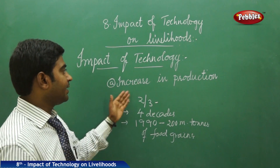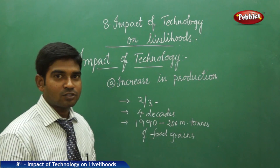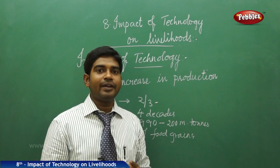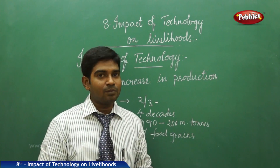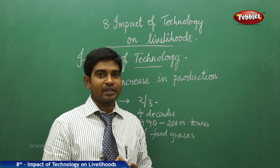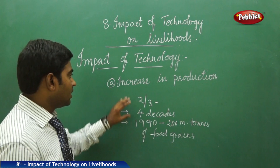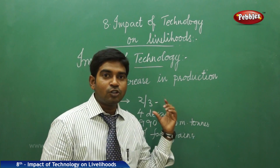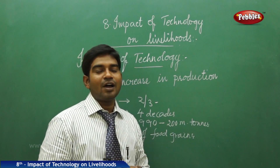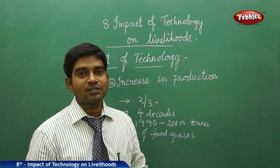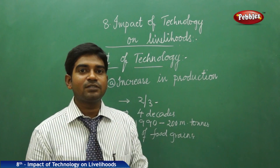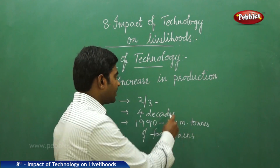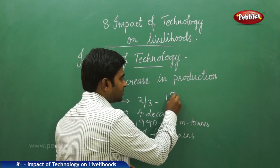The impact of technology has been divided into three categories: increase in production, how technology has added value, and the decline of animals in production activities. Starting with production — nearly two-thirds of farmers in India started to use the best seeds and fertilizers during the transition period of the 1960s.